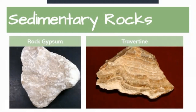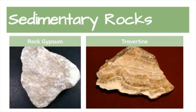Next, we have rock gypsum and travertine. Gypsum is an evaporite mineral formed from the evaporation of liquid, used in the construction of drywall and plaster — so the walls in your home are probably made from gypsum. Travertine is a form of limestone deposited by mineral springs, especially hot springs found in limestone caves. The lobby walls of the Willis Tower, or Sears Tower, in downtown Chicago are made of travertine.